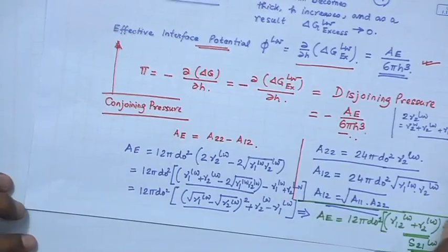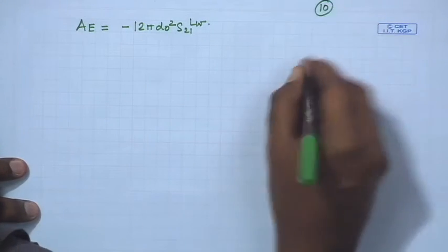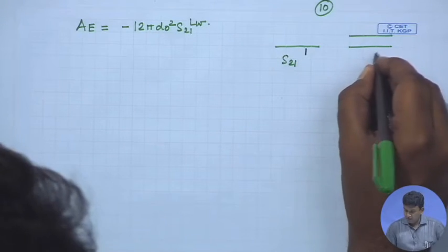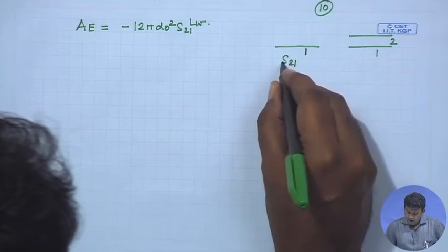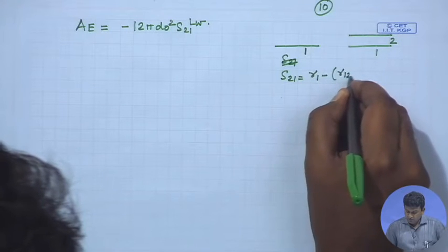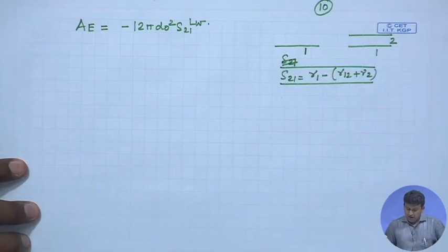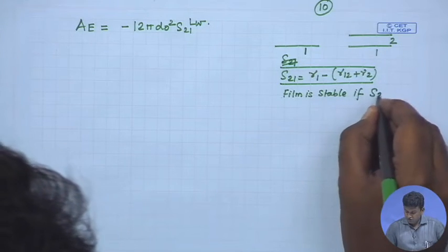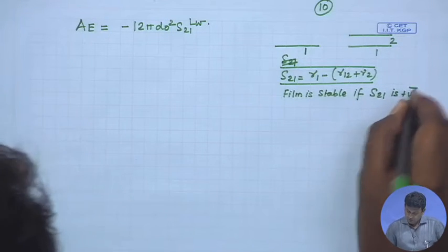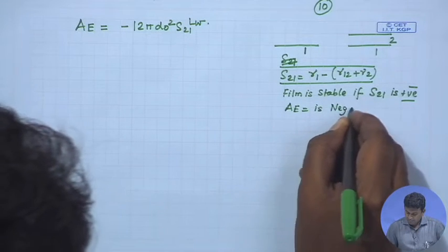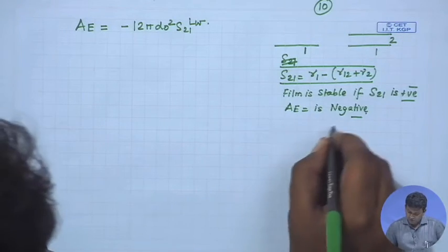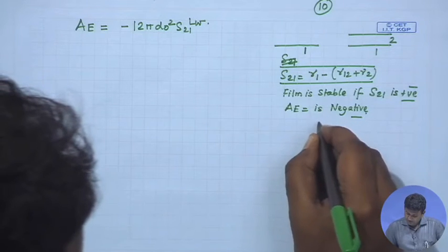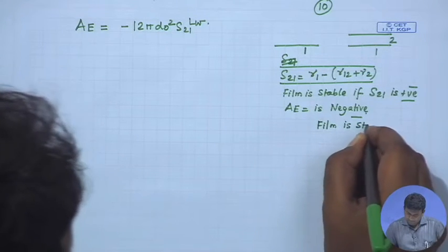This makes it easy to correlate film stability. Writing material 1 as substrate and material 2 as film, the spreading coefficient S21 = γ1 − (γ12 + γ2). We know the film is stable if S21LW is positive, which means Ae is negative is a necessary condition for film stability. Ae negative → film is stable.